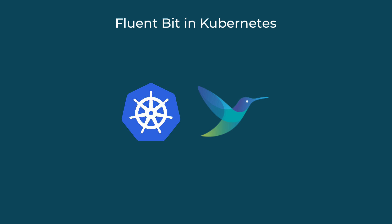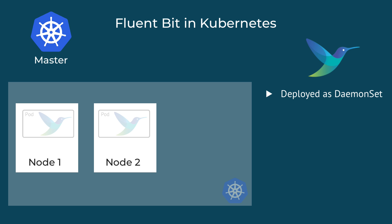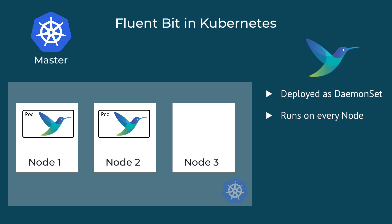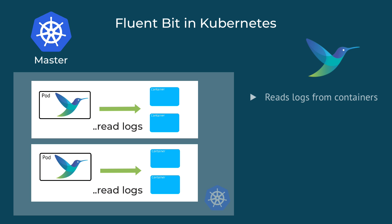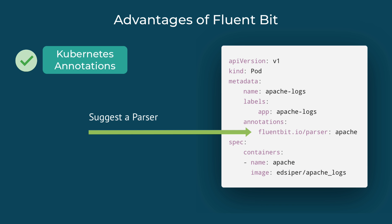Now, how does FluentBit actually run in a Kubernetes cluster? FluentBit gets deployed as a DaemonSet, which means it will run on every Kubernetes node. So when a new node gets added to the cluster, a FluentBit pod will start there immediately. On each node, FluentBit will gather logs from all the containers on that node, and also gather metadata for those logs — like pod IP, container IP, and namespace — from the Kubernetes API. A cool feature is that we can suggest which parsers to use on pods using annotations in Kubernetes configuration files.